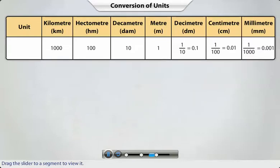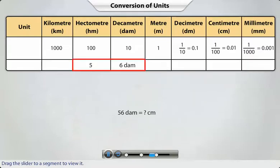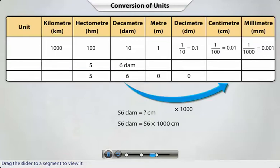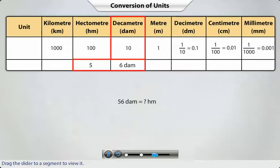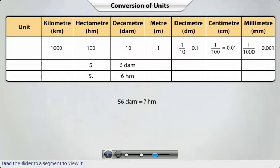Suppose we want to convert 56 decimeters to centimeters — we'll need to multiply 56 by thousand, as the centimeter column appears three places to the right of the decimeter column. But if we want to convert 56 decimeters to hectometers, we'll need to divide 56 by ten, as the hectometer column appears one place to the left of the decimeter column.